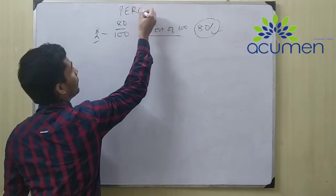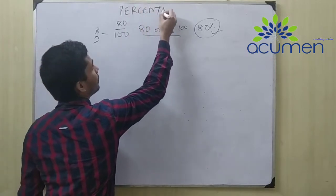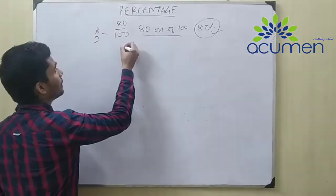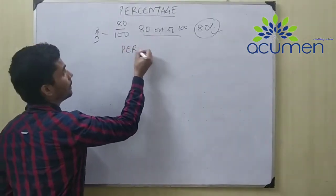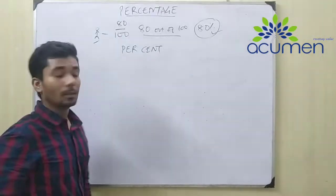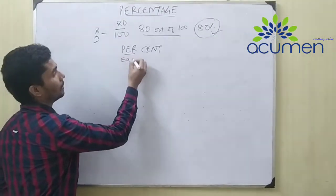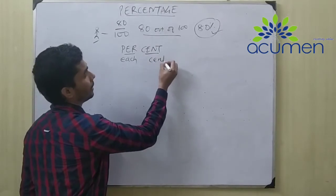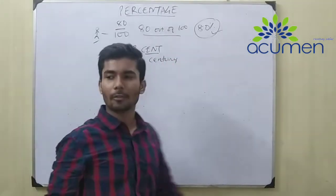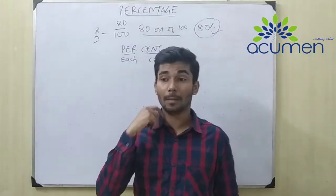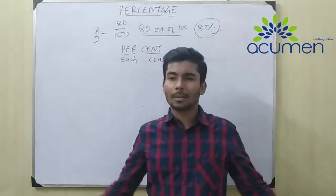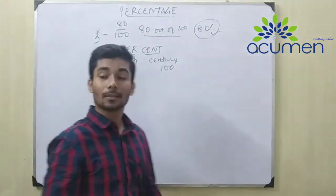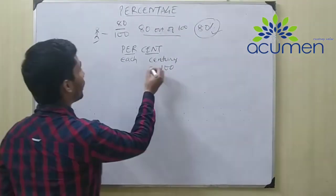So students, this chapter's name is Percentage. What is the meaning of percentage? The word percentage has two terms: 'per' means each, and 'cent' means century. The term century means 100 — we have all heard that MS Dhoni scored a century, which means he scored 100 runs.